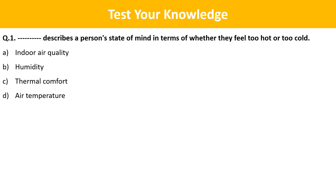Now we will see some practice questions. Question 1: Which term describes a person's state of mind in terms of whether they feel too hot or too cold? Option A: Indoor air quality. Option B: Humidity. Option C: Thermal comfort. Option D: Air temperature. The correct answer is Option C — Thermal comfort.